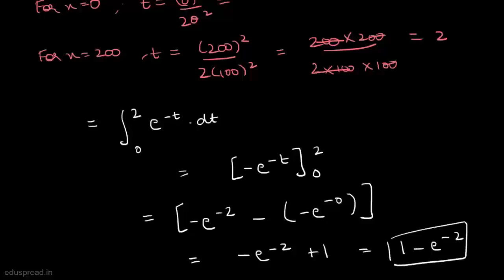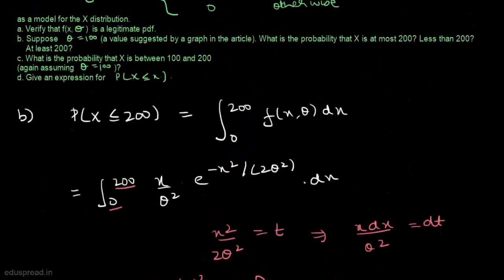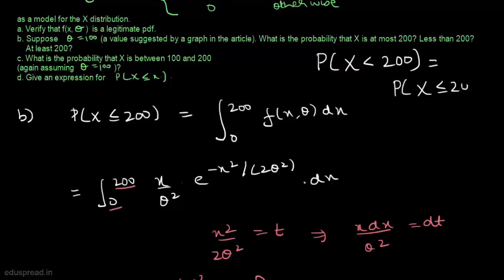So P(X ≤ 200) = 1 minus e raised to the power minus 2. Since X is a continuous random variable, the probability that X is less than 200 equals the probability that X is less than or equal to 200. Therefore P(X < 200) also equals 1 minus e raised to the power minus 2.